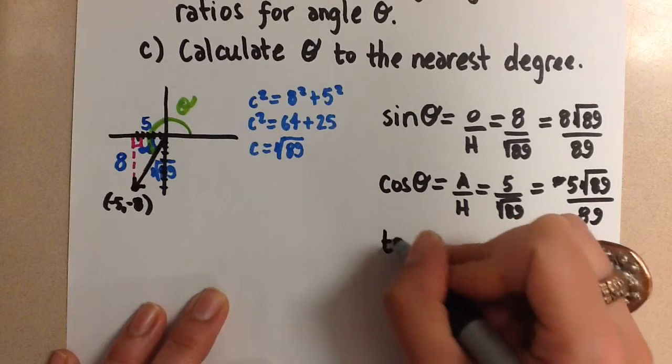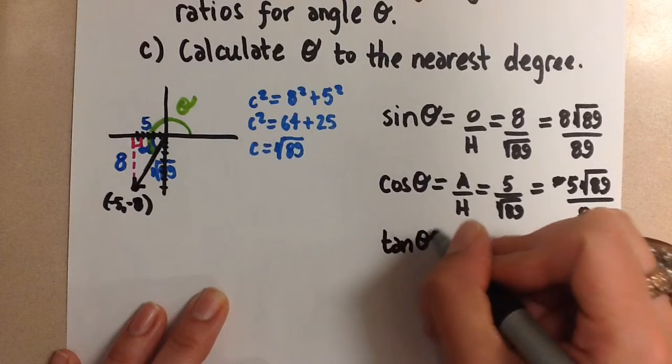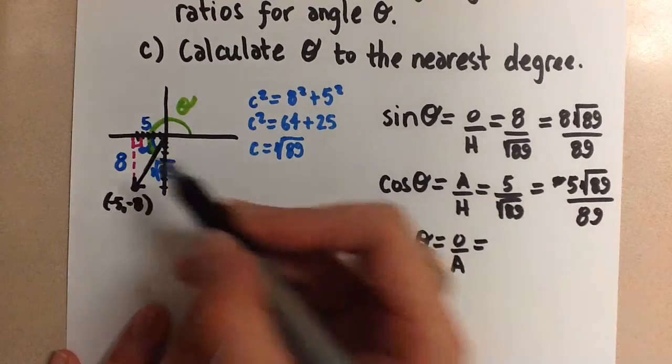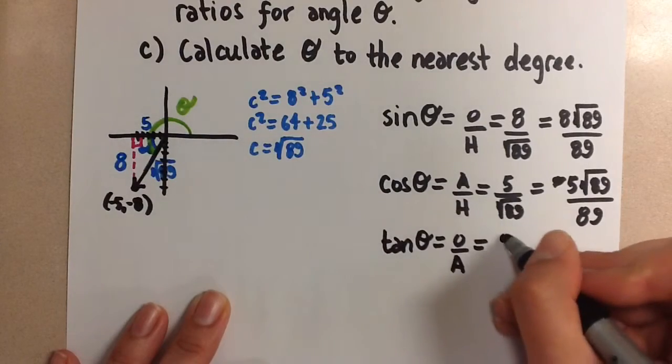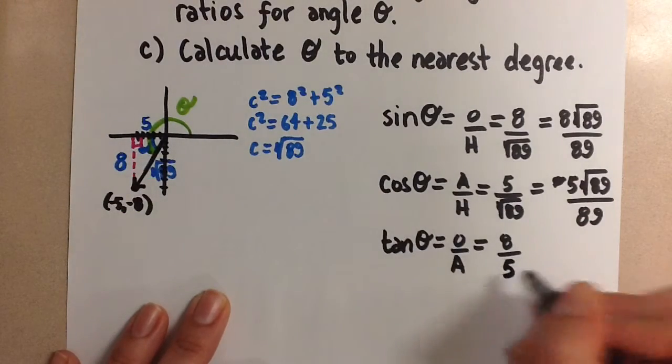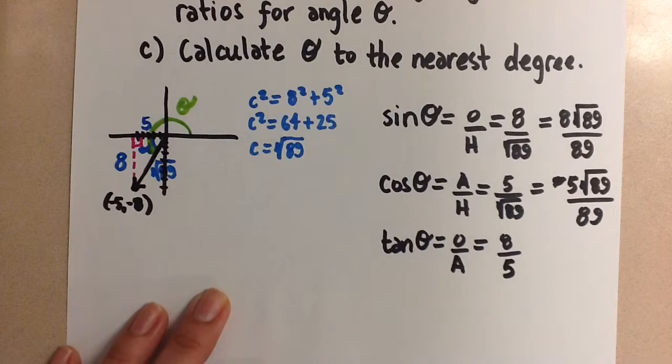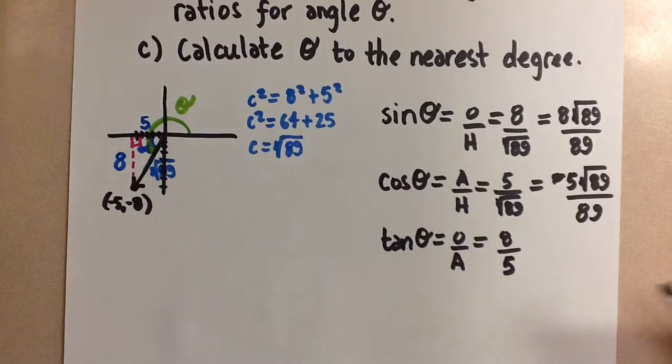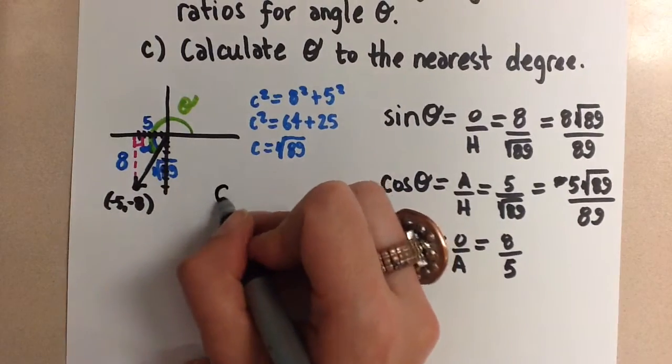And finally, the tangent of theta is opposite over adjacent. And the opposite side is 8. And the adjacent side is 5. So we get 8 over 5 here. Now for all of these, we did not take into account our cast rule. And we do have to do that. So let's go back.